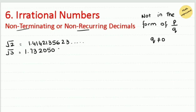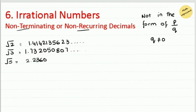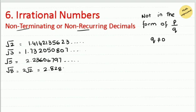More examples of irrational numbers: √3 = 1.7320508..., √5 = 2.2360679..., and √8 can be written as √(4×2) = 2√2 = 2.8284271... All of these are non-terminating decimals, so they are irrational numbers.